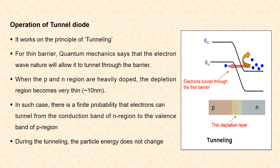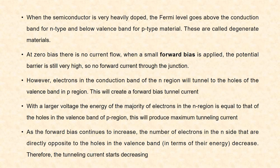During this tunneling, the energy of the particle does not change. When the semiconductor is very heavily doped, the Fermi level goes above the conduction band for n-type and below the valence band for p-type material. These materials are called degenerate materials.